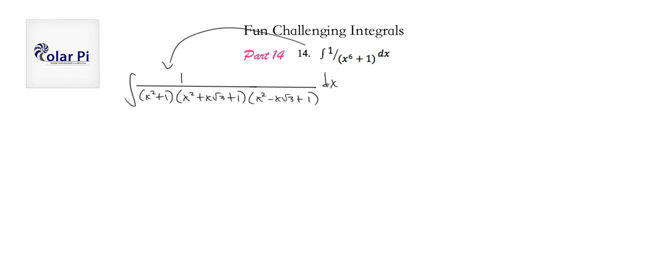So, we're going to take this guy and figure out its partial fraction decomposition. Now, look at what will be the denominators of the three rational expressions into which we'll break it up. All of them are quadratics. So, their numerators must assume linear forms.